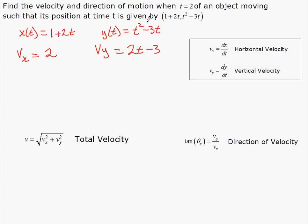We need to know at time 2, so the x velocity at 2 is 2. The y velocity at 2 is going to be 2 times 2 minus 3 or 1.